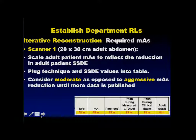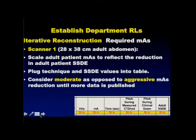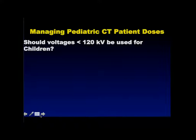Most sites today are using iterative reconstruction. Everything discussed so far assumes no iterative reconstruction. To apply this to iterative reconstruction: most sites pick a moderate level of iterative reconstruction through trial and error and settle on a clinical level. All you need to do is calculate what the CTDI vol would be at the iterative reconstruction techniques instead of standard techniques, then plug that data into the colored boxes in the tables. The ImageGently tables work for iterative reconstruction too.